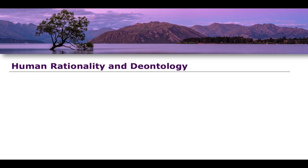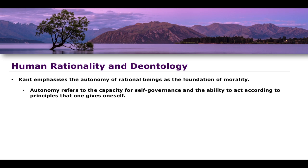Deontology is very important to Immanuel Kant's ethical theories. An additional concept central to Kantian ethics is human rationality — here, Kant emphasizes the autonomy of rational beings as the foundation of morality. Fundamentally, if you were to ask where Kantian deontological principles derive their foundations, you would speak about rational agency, the autonomy of humanity, and the rationality of humanity. Autonomy, specifically according to Kant, refers to the capacity for self-governance and the ability to act according to principles one gives oneself.